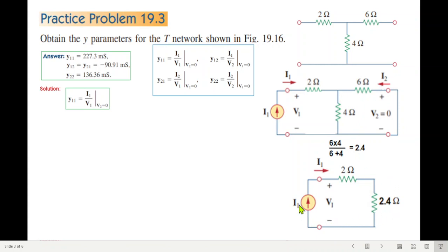Putting the equivalent resistance 2.4 ohms, this becomes our circuit. Now the simple voltage equation: v equals i times the resistances, 2 plus 2.4, so this will be i1 times 4.4.